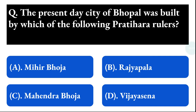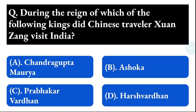Next question: during the reign of which of the following kings did Chinese traveller Xuanzang visit India? Option A: Chandragupta Maurya, option B: Ashoka, option C: Prabhakara, option D: Harsha Vardhana. The correct answer is option D, that is Harsha Vardhana.